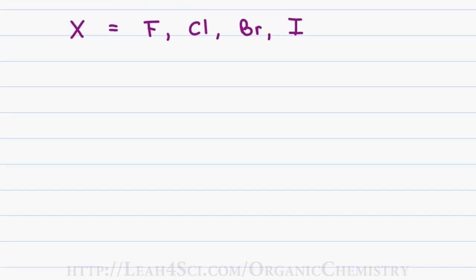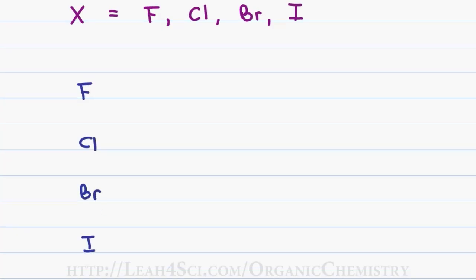The rules for naming alkyl halides are just like the rules for naming organic compounds where the halogen falls into the prefix category or substituent. To name a halogen in an organic compound you drop the I-N-E from the ending and add the letter O. For example for fluorine you drop the I-N-E, add the letter O and you get fluoro. For chlorine you get chloro, for bromine you get bromo and for iodine you get iodo.